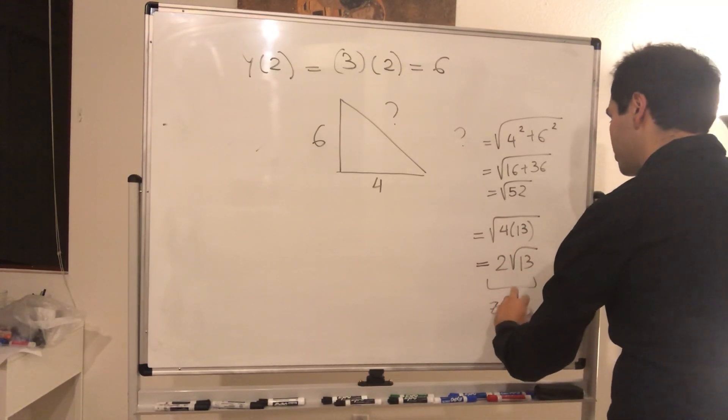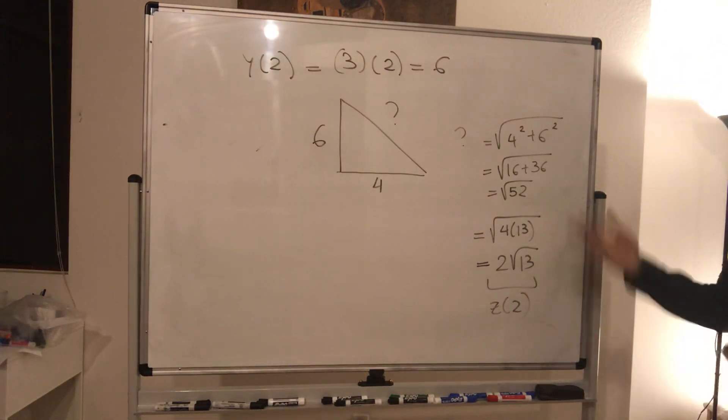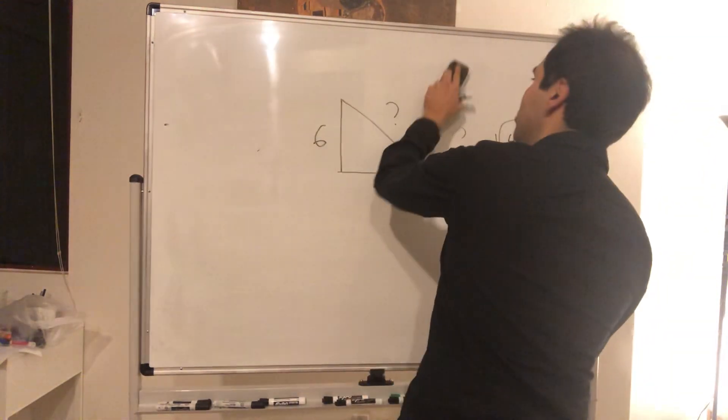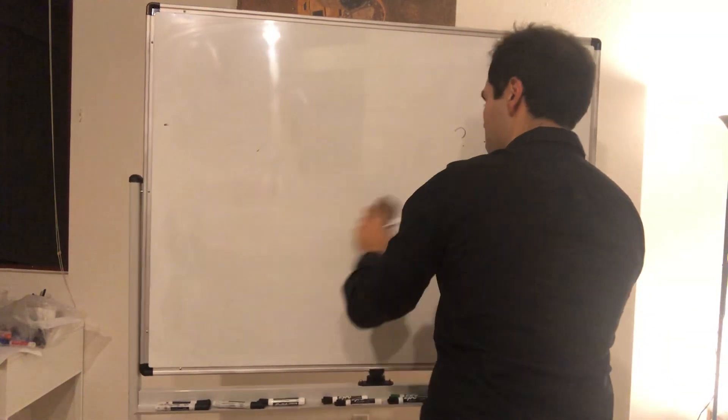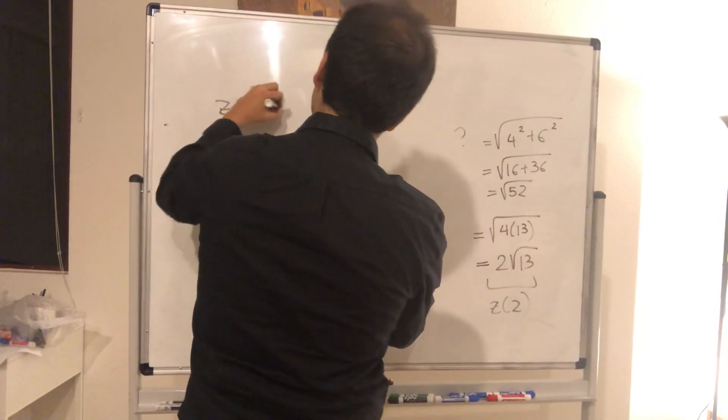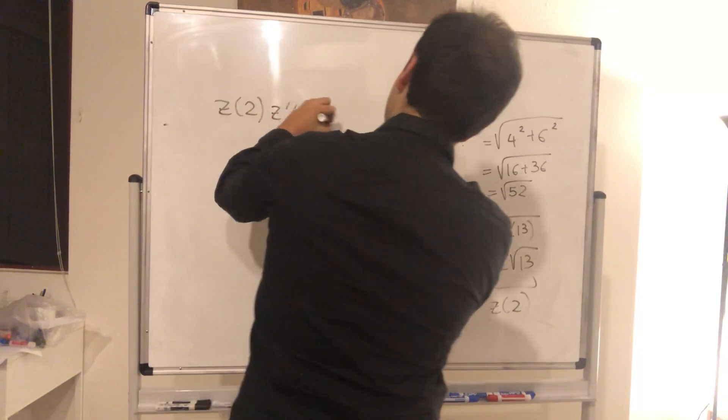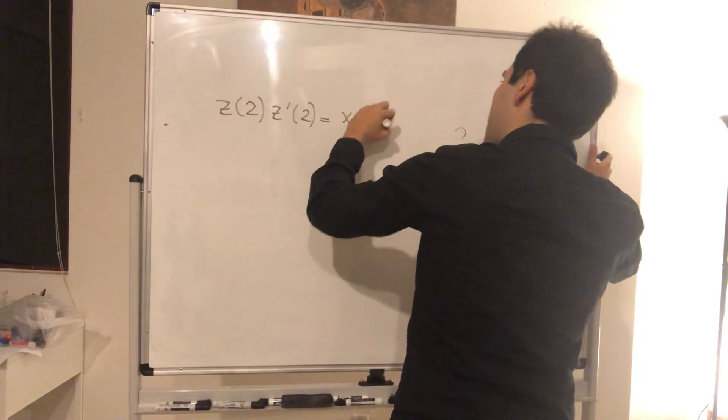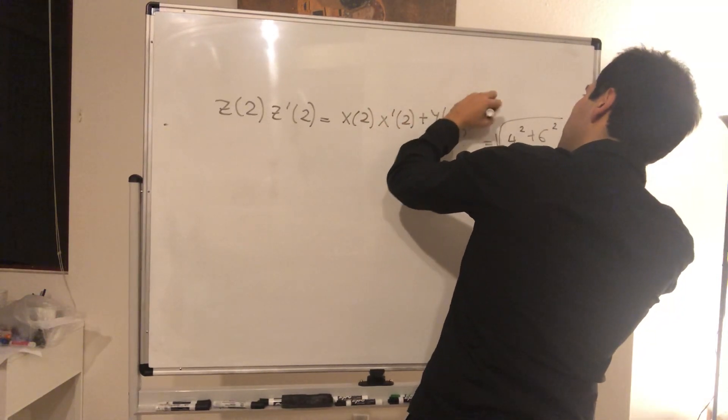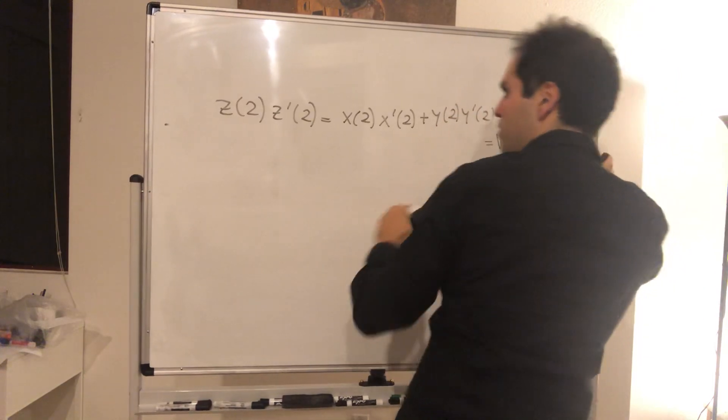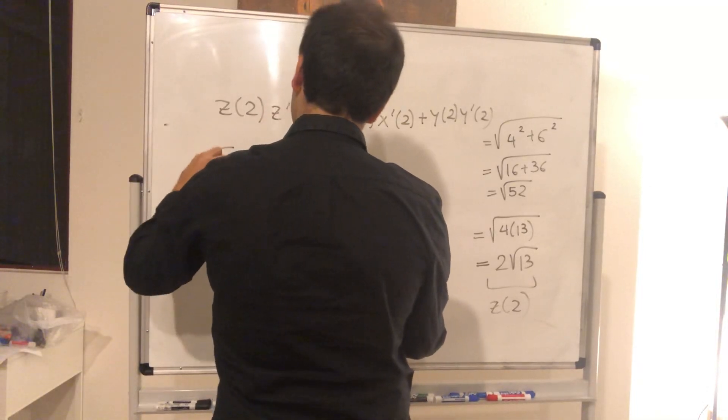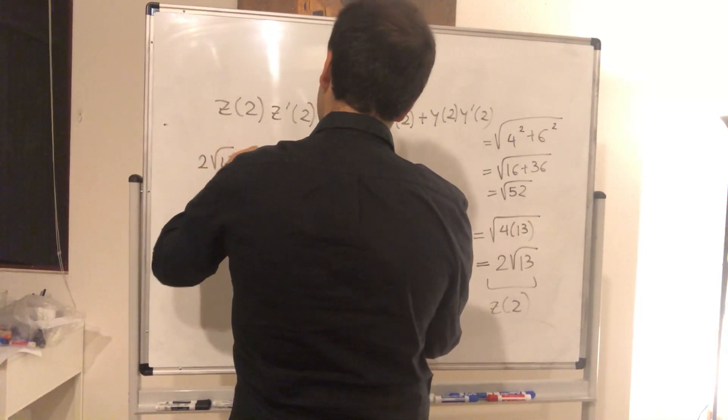Okay, good. And last but not least, as I said, we just plug it into our equality. So what did we have? I believe z of two z prime of two equals x of two x prime of two plus y of two y prime of two. Okay, therefore what do we have? So z of two, it's two square root of 13 times z prime of two.